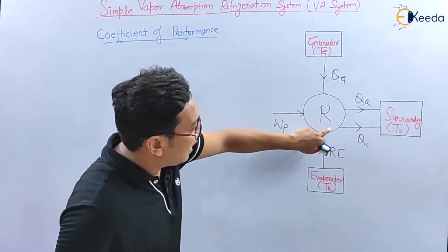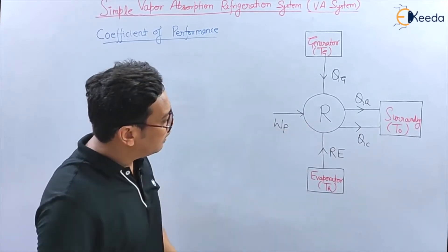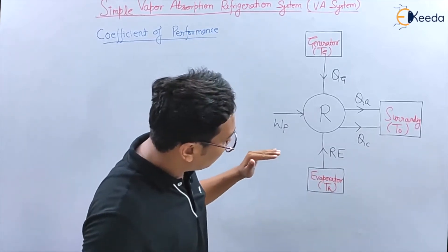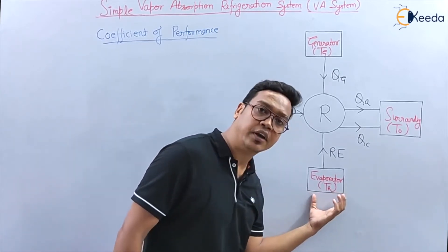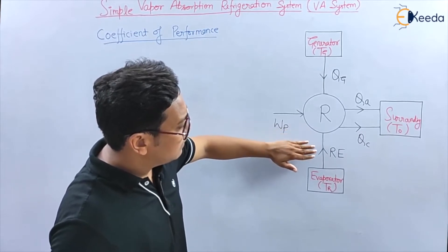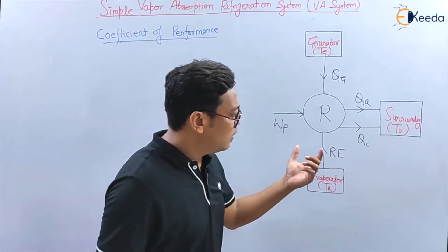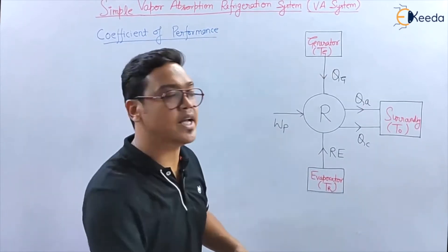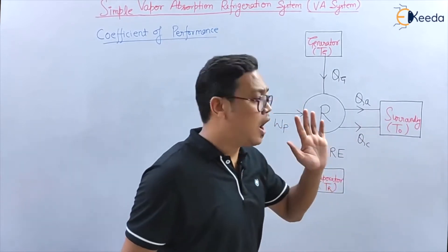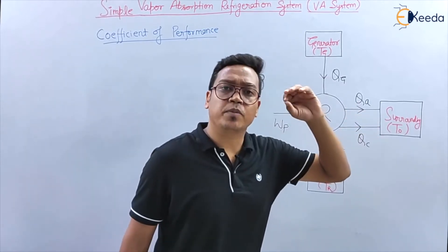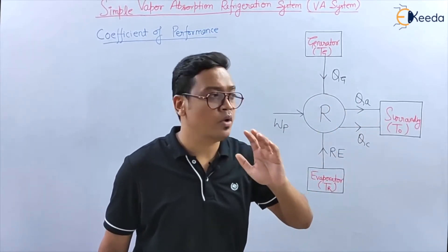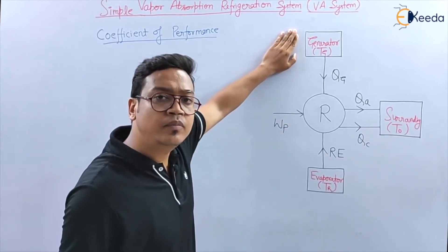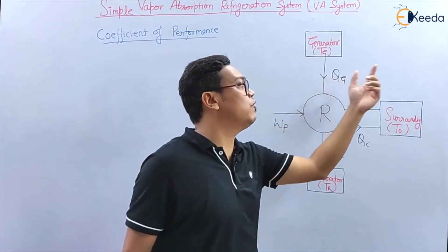This is a simple Vapour Absorption System. The process was happening like this: the refrigerant was taking heat from the evaporator. After that, in the absorber, the ammonia — which was the refrigerant — was absorbed by water. In the absorber, some amount of heat was rejected to the surroundings. After that, the mixture of water and ammonia, in liquid form, was pumped and sent to the generator. In the generator, an amount of heat QG was given to the system.